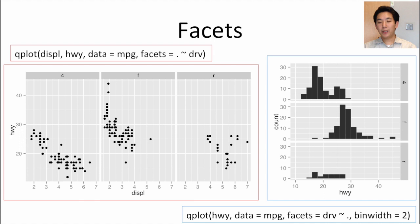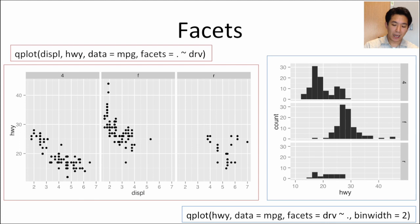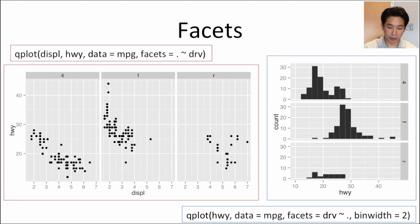Another feature of ggplot is called facets — like panels in lattice. The idea is that you can create separate plots indicating subsets of your data defined by a factor variable, making a panel of plots to look at separate subsets together. Rather than color-coding subsets — which can be tricky when data points overlap — you can split the groups into separate panels. Here I've made three separate scatter plots of displacement versus highway mileage, split by drive type (four-wheel, front, rear). I specify this with the facets variable using a tilde-separated format.